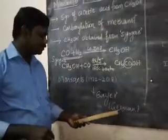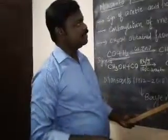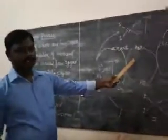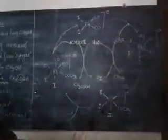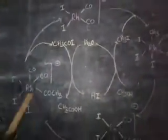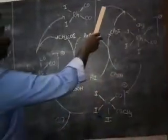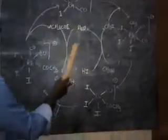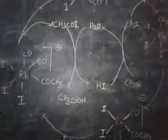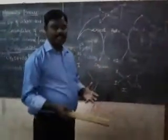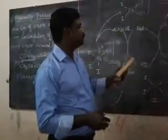Recently, Monsanto was acquired by a German-based company called Bayer. With this introduction, let us go into the mechanism and steps involved in the production of acetic acid. Here is the diagrammatic representation of acetic acid synthesis. You can see one outer cycle — a bigger cycle drawn in pink chalk — and another inner cycle drawn in green chalk. In our previous lectures we had only one catalytic cycle, but here we have two catalytic cycles.